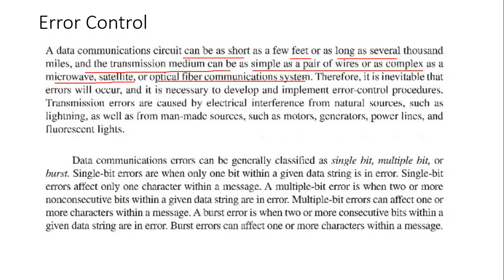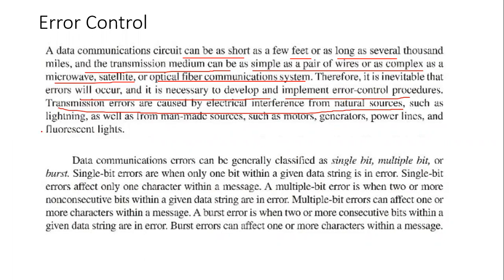Therefore, it is inevitable that errors will occur, and it is necessary to develop and implement error control procedures. Transmission errors are caused by electrical interference from natural sources such as lightning, as well as man-made sources such as motors, generators, power lines, and telephone lines.